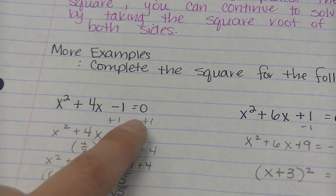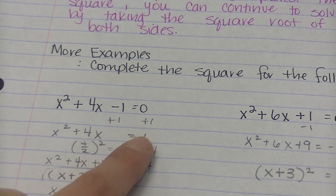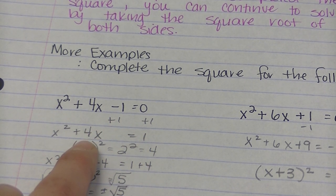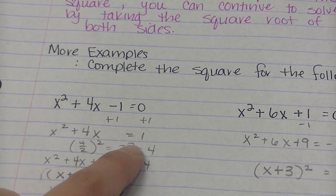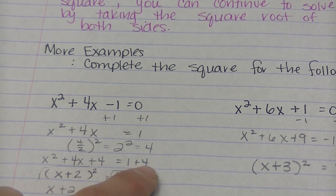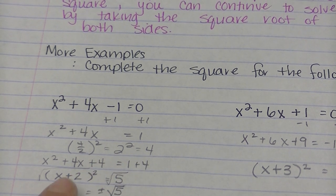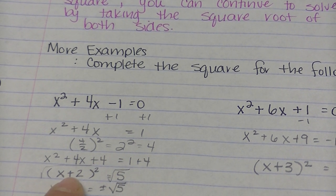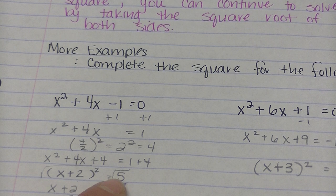So the first thing we do is get rid of the 1 by adding 1 to both sides. Then I'm going to take the 4 and divide by 2 and square it. 2 squared is 4. I'm going to add 4 to both sides. So that leaves me with x plus 2 squared and that equals 5.